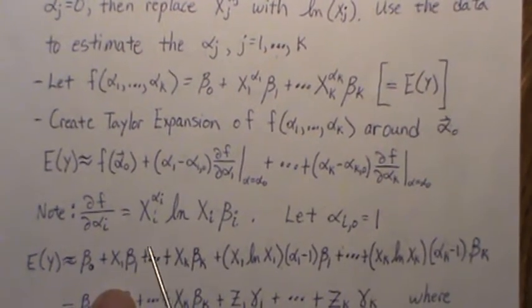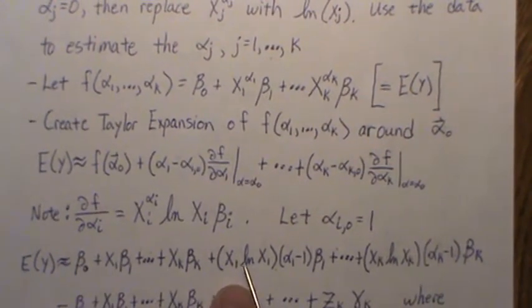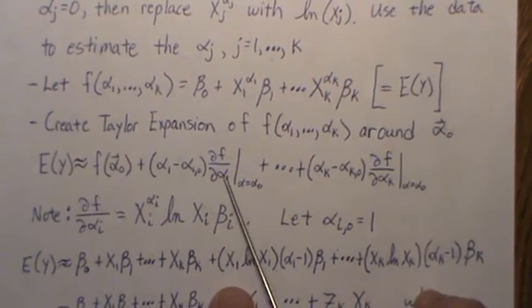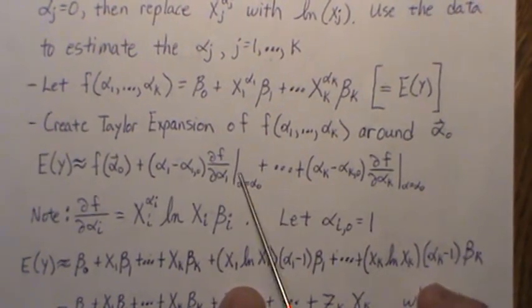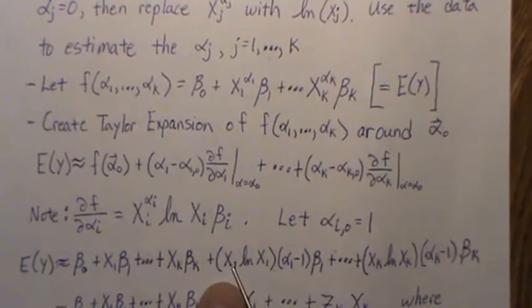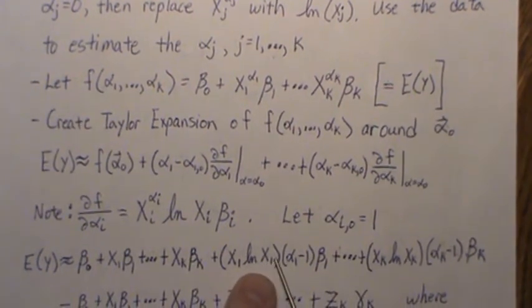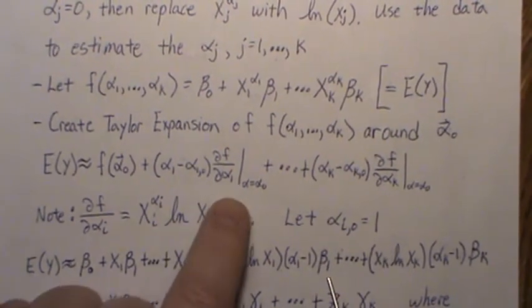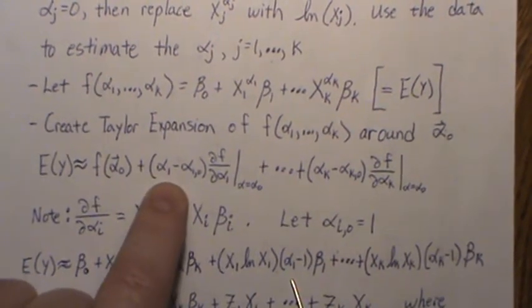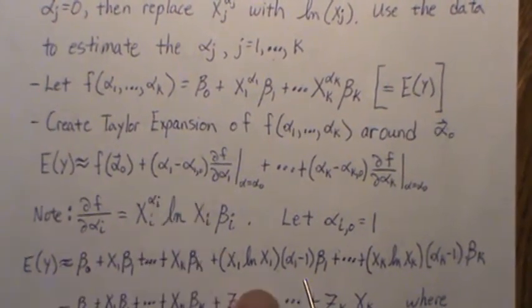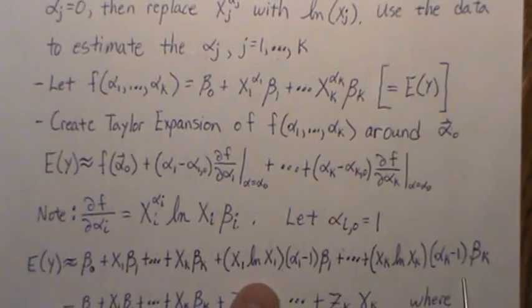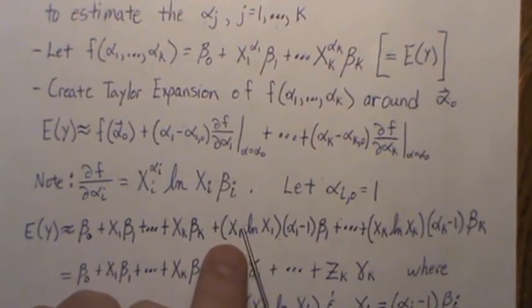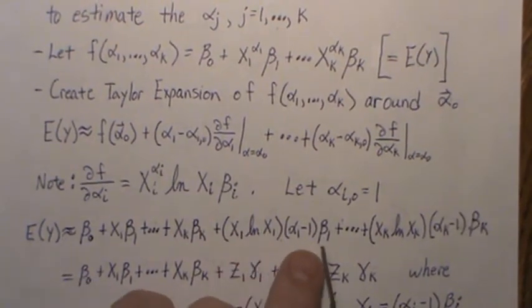So this expression becomes this, right? The expected value of y. So the functional value, which is this all evaluated at 1, means you just put a 1 exponent in front of all the X's. Then this component - the derivative evaluated at 1 - is this piece: X^1 log of X_1. And then we have the beta brought out, and then this alpha_1 minus 1. We do that for all k variables and this is what we get.